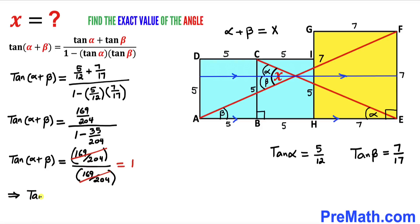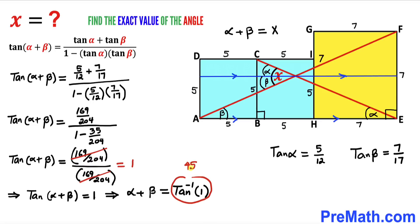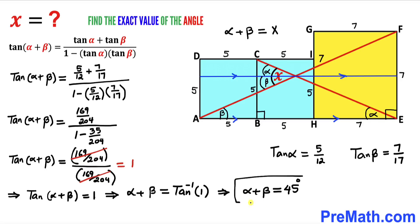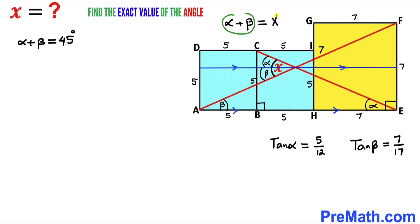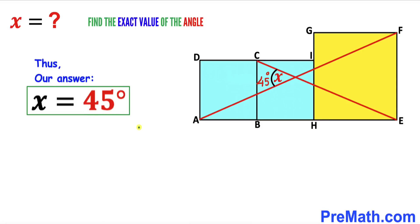So tangent of (alpha + beta) equals 1, which means alpha + beta = arctan(1) = 45 degrees. Since angle alpha + beta equals angle X, our angle X turns out to be 45 degrees. Thanks for watching and please don't forget to subscribe to my channel for more exciting videos. Bye.